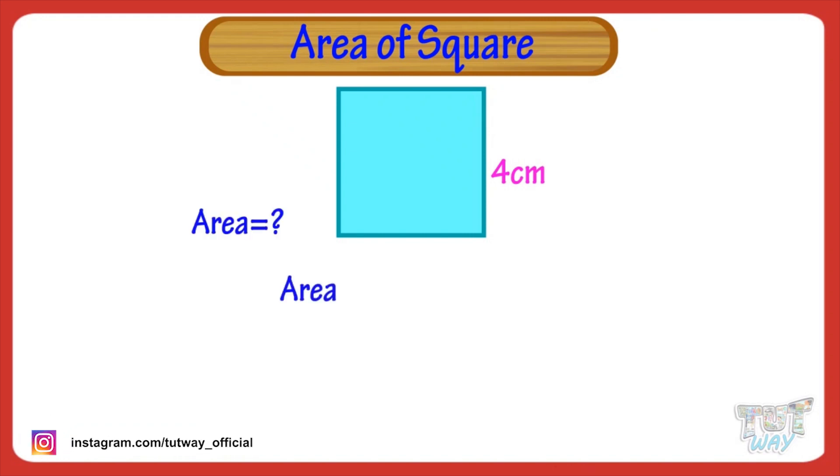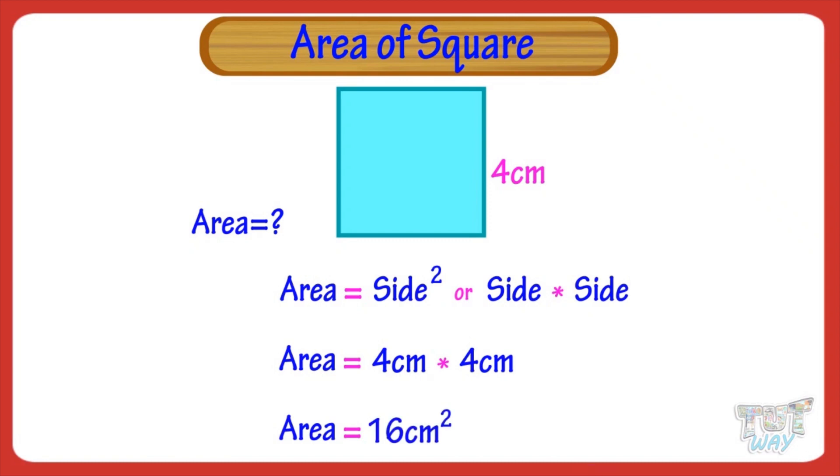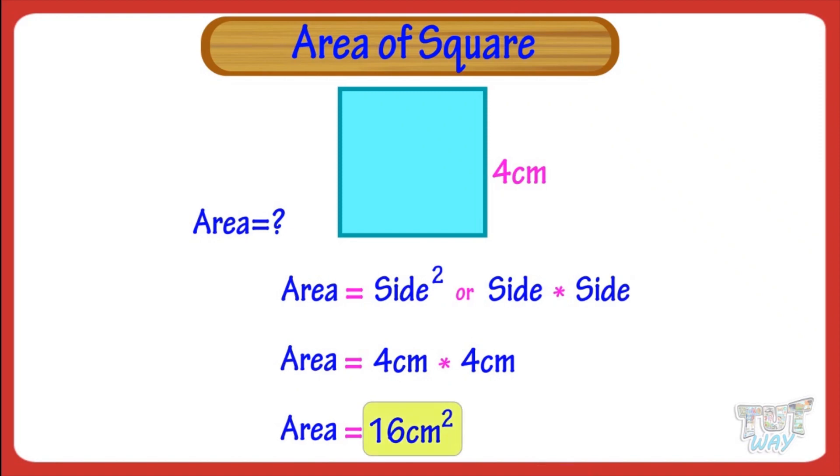The area of a square is side square, or side multiplied by side. So, 4 multiplied by 4 equals 16. So, area of this square equals 16 cm square.